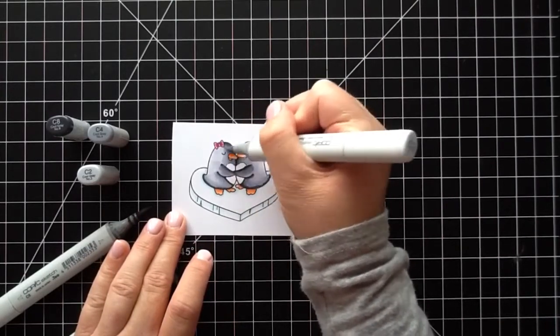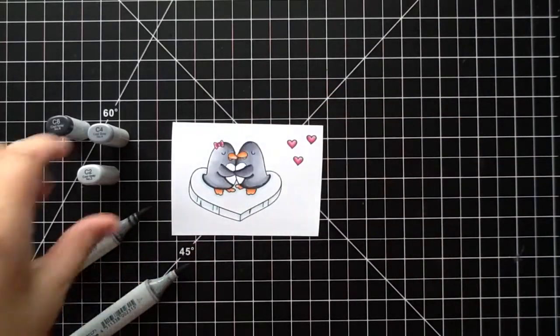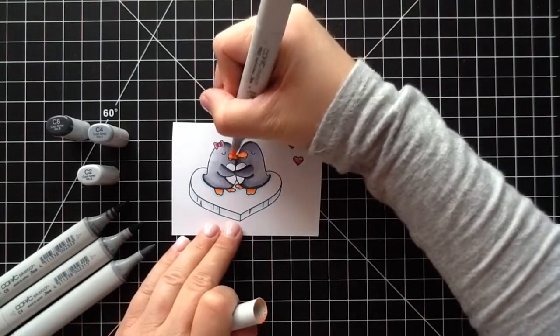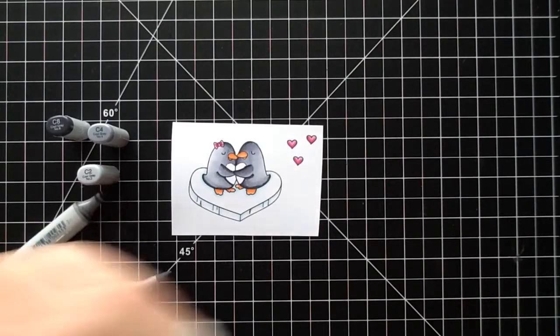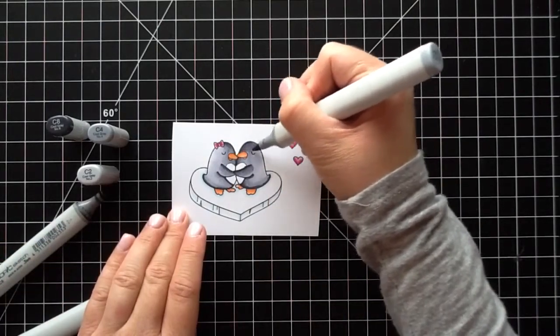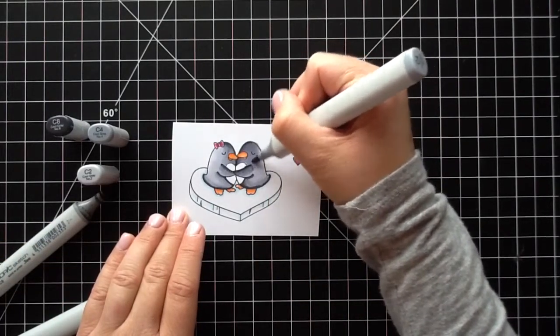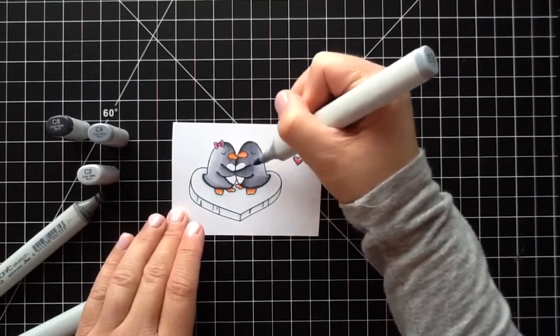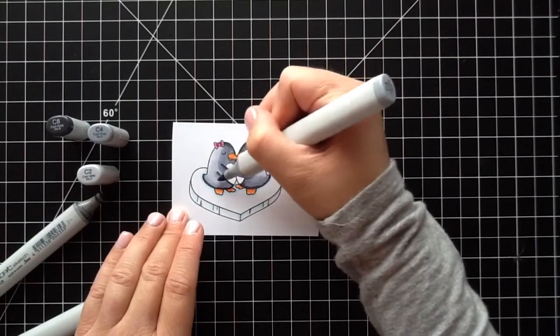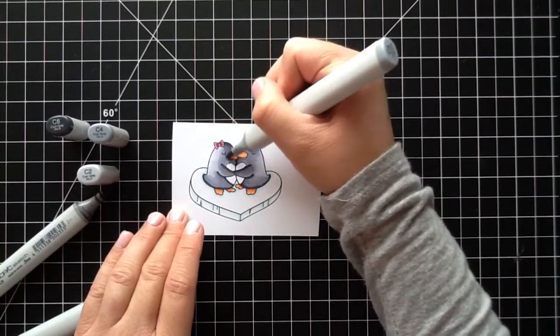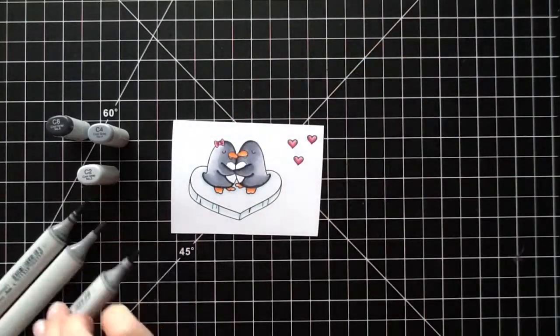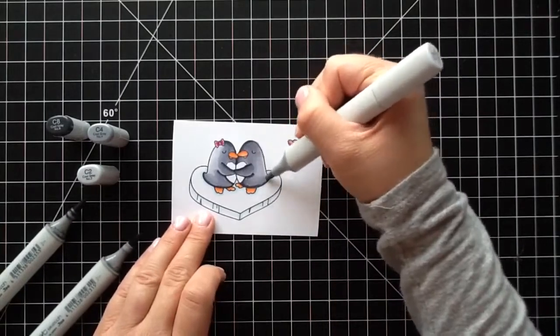I wanted to still be able to see their little eyes and see their cute little arms and everything as well. I just went over that spot where I had used the colorless blender and added in some orange. I'm just playing around and darkening it up now. Right now I'm using the C4, and then I go in with the C2.